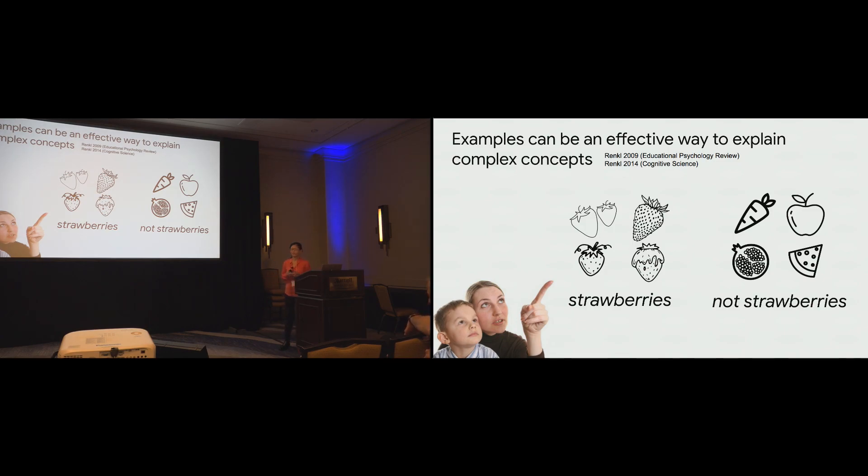For instance, rather than explaining to a child what the definition of a strawberry is, we could instead give a child many examples of strawberries and non-strawberries, and through that implicitly explain what the essence of a strawberry is.